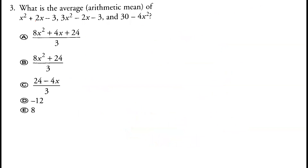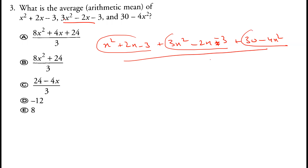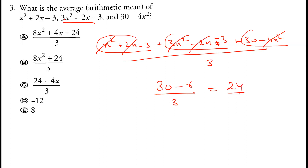What is the average of the three expressions: x squared plus 2x minus 3, and 3x squared minus 2x minus 3, and 30 minus 4x squared? We divide by 3. x squared plus 3x squared minus 4x squared cancels out; 2x minus 2x cancels out. We get 30 minus 6, and minus 3 minus 3 is 6, so 30 minus 6 is 24. 24 divided by 3 is 8, so option E is correct.